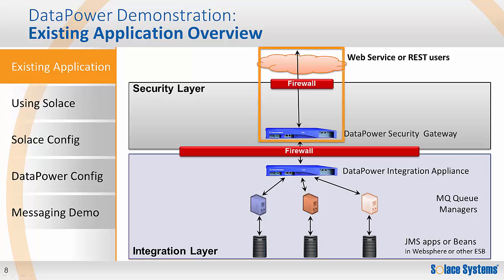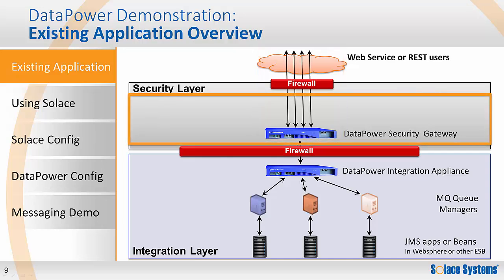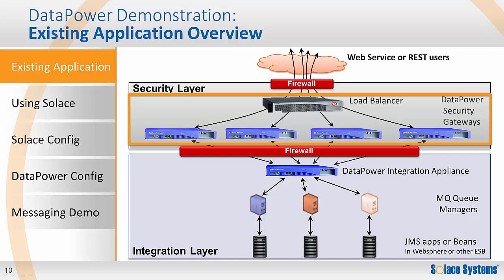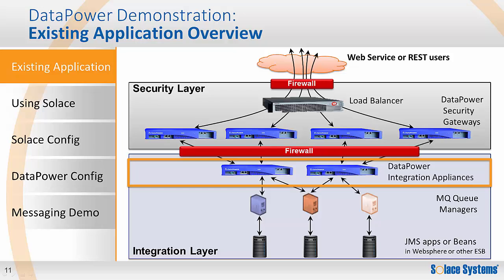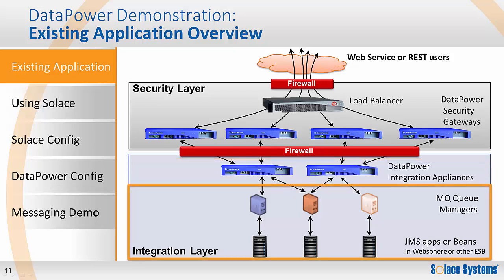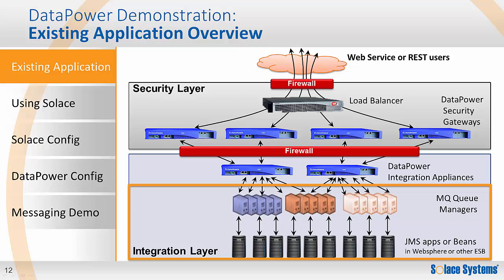In these scenarios, the system must deal with a large number of individual users who can have high peaks in demand. The applications are critical to business needs, so requests are load balanced across multiple Datapower security gateways for scale and fault tolerance. Similarly, there are multiple integration appliances for scale and fault tolerance. The backend applications require many queue manager clusters to meet peak demand, resulting in an architecture that is reasonably simple except for the many messaging servers needed.